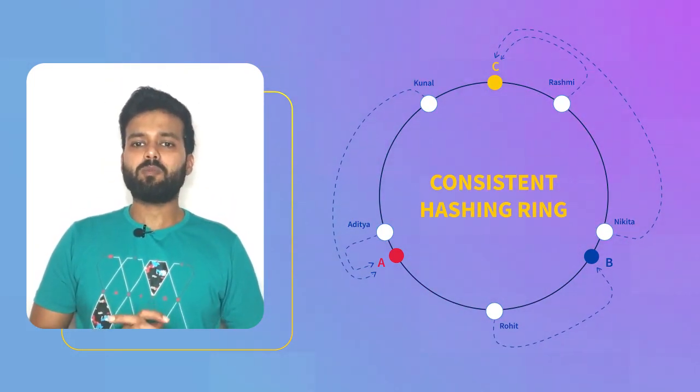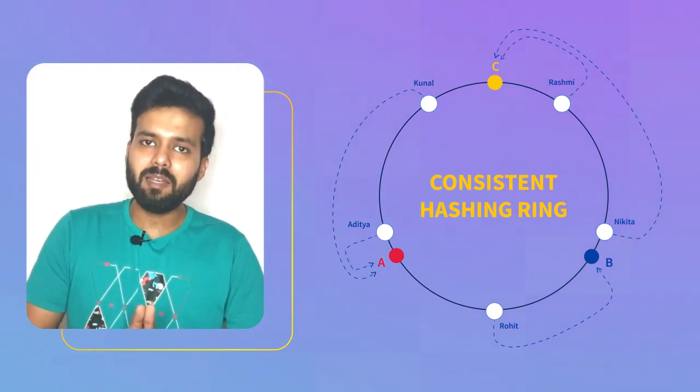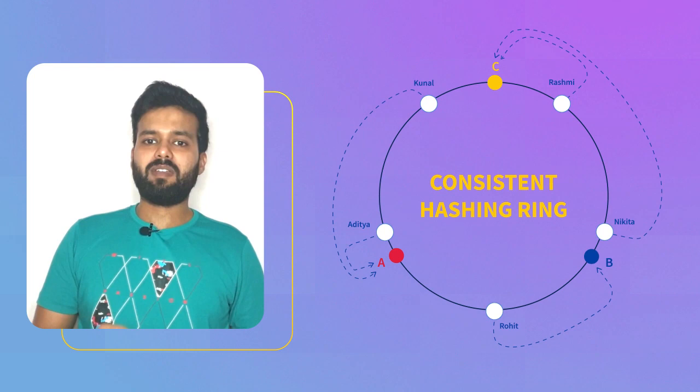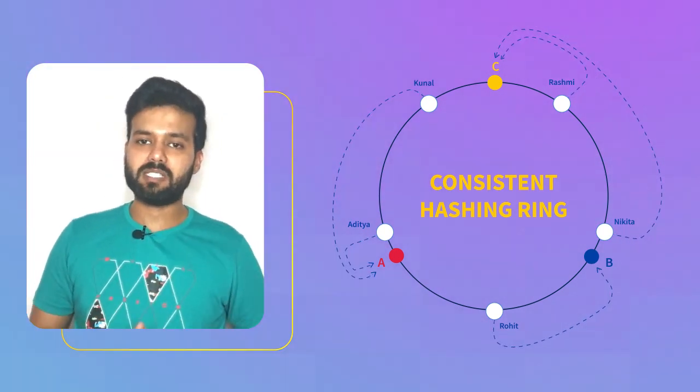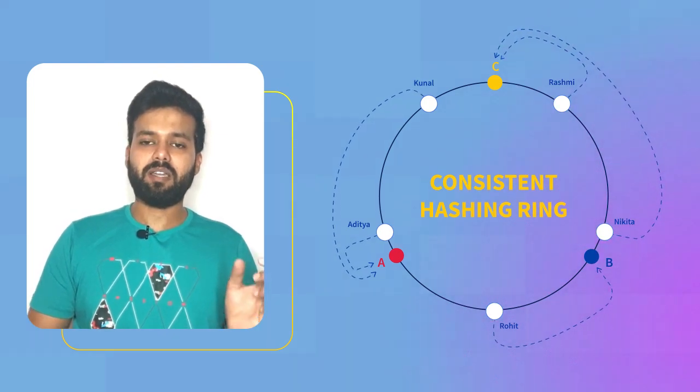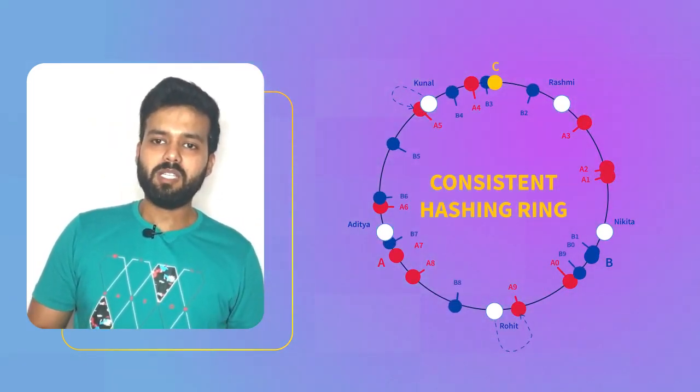To solve for the other problems, what can we do? We can assign many labels to each server. So now instead of having labels A, B, C for three servers that we had, we have server labels between A0 to A9, B0 to B9, C0 to C9 all marked in the same circle.